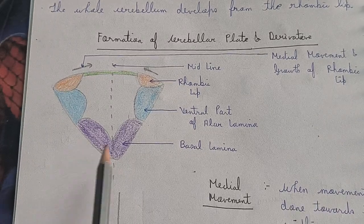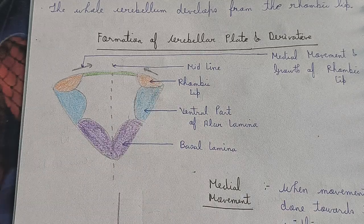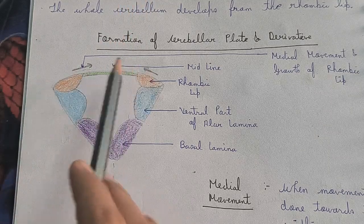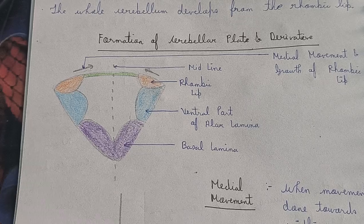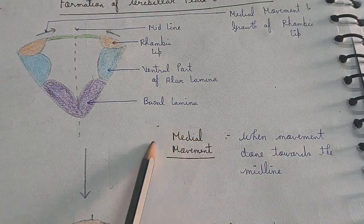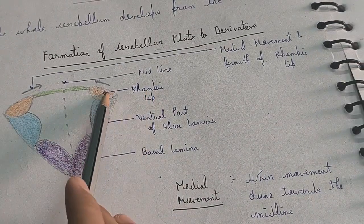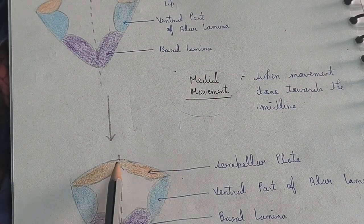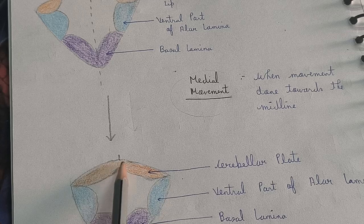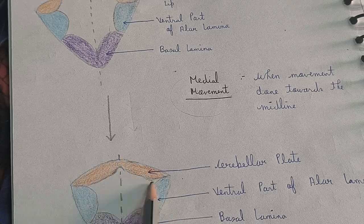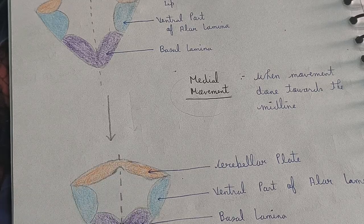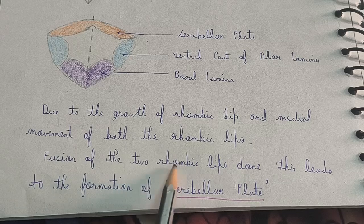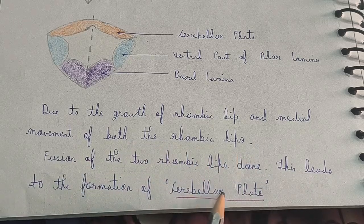So this is the basal lamina, this is the ventral part of the alar lamina, and this is the rhombic limb. This is the midline. The rhombic limb undergoes growth and also moves towards the midline — this movement towards the midline is known as medial movement. Due to the growth of the rhombic limb and this medial movement, finally the two rhombic limbs fuse with each other. As a result of the fusion of the two rhombic limbs, the cerebellar plate is formed.